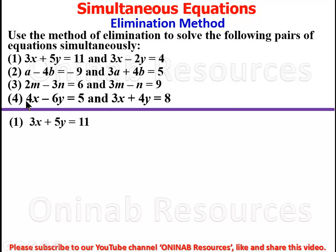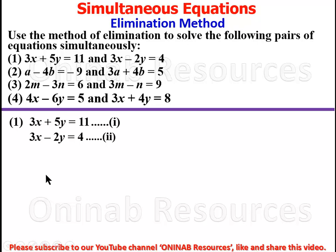The first equation is 3x plus 5y equal to 11, as equation 1. The second is 3x minus 2y equal to 4, as equation 2. The method of elimination is meant to eliminate one of the two variables. We study the two equations and see which variable has coefficients of the same magnitude. Here we have 3x in equation 1 and 3x in equation 2.